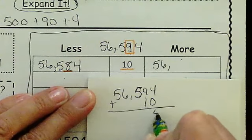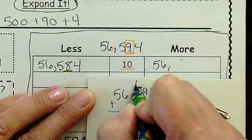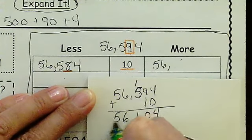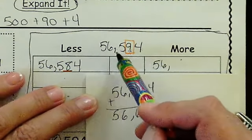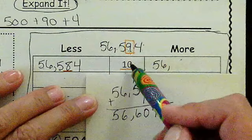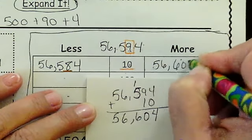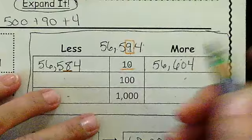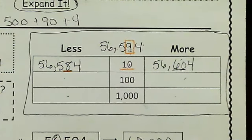What's 4 plus 0? So 9 plus 1, 1 plus 5, and bring those two down. So 56,594 plus 10 is 56,604. So I went up in place value, right? I went up 10. That's what I did.